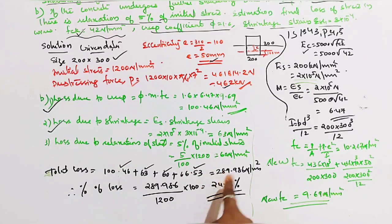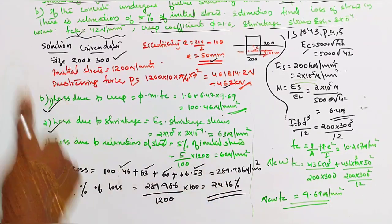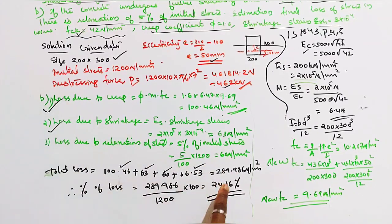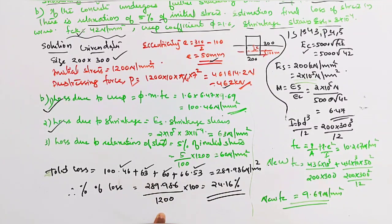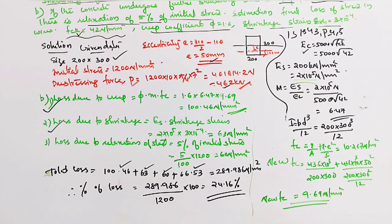Total loss = 289 N/mm². For question A and B: percentage of loss = total loss divided by initial stress × 100 = 24.16%. This is a simple but comprehensive question.